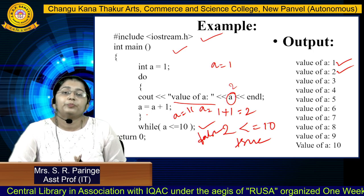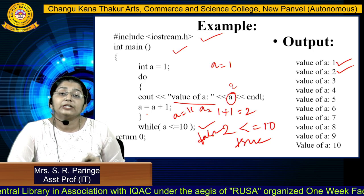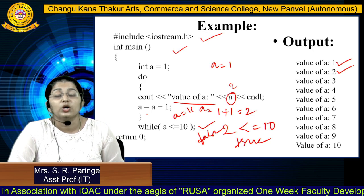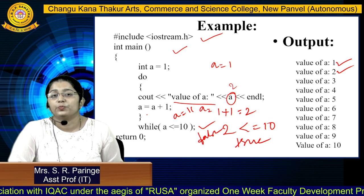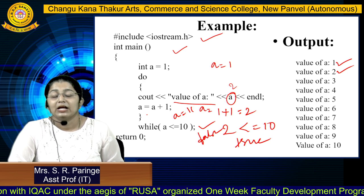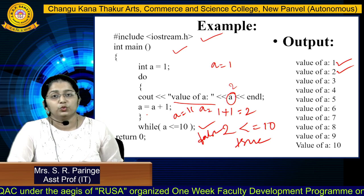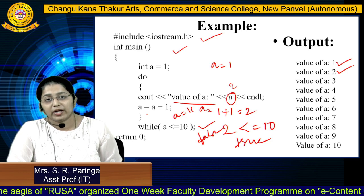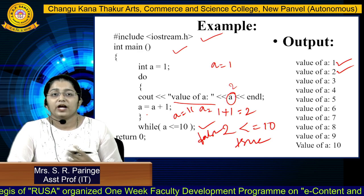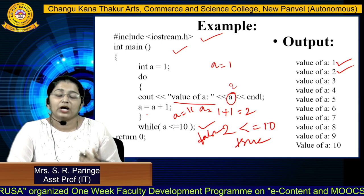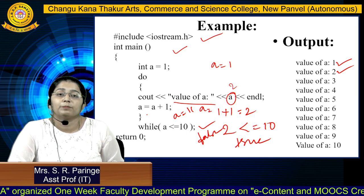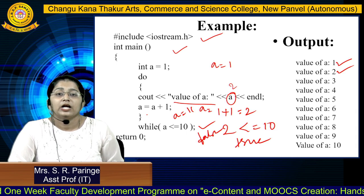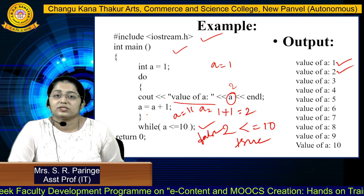So when you want to perform multiple iterations or show a repetitive operation, you can use looping statements. There are 3 types of loops: for loop, while loop, and do-while loop. As we had already studied the for loop, today we have completed the topics of while loop and do-while loop. Thank you students.